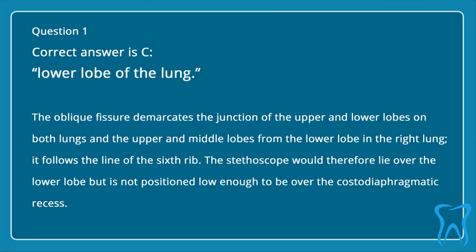Correct answer: c. Lower lobe of the lung. The oblique fissure demarcates the junction of the upper and lower lobes on both lungs, and the upper and middle lobes from the lower lobe in the right lung. It follows the line of the 6th rib.